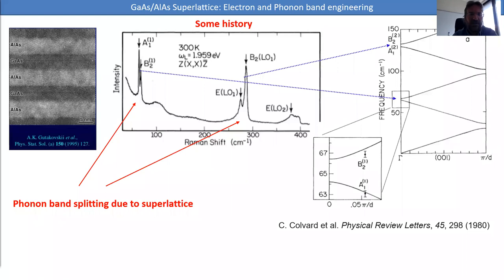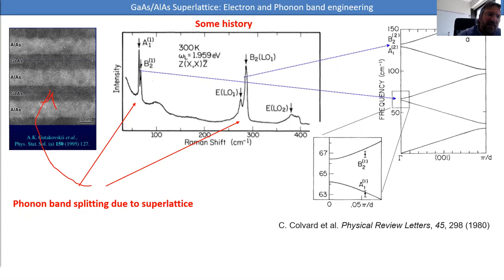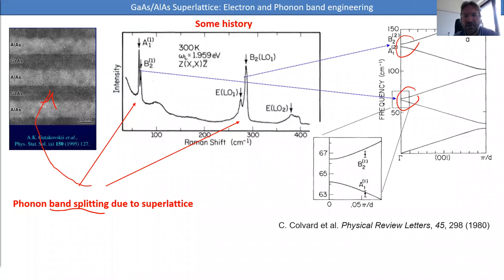Let me start by going back in history. Superlattices have been studied quite a bit, and I'd like to point out a few results I find really interesting. One of the very standard structures is gallium arsenide / aluminum arsenide superlattices. You can observe band splitting: if you create this superlattice, you will see band splitting in the Raman spectrum, which can also be understood in terms of the phonon dispersion curves. These experiments date back quite a few years.